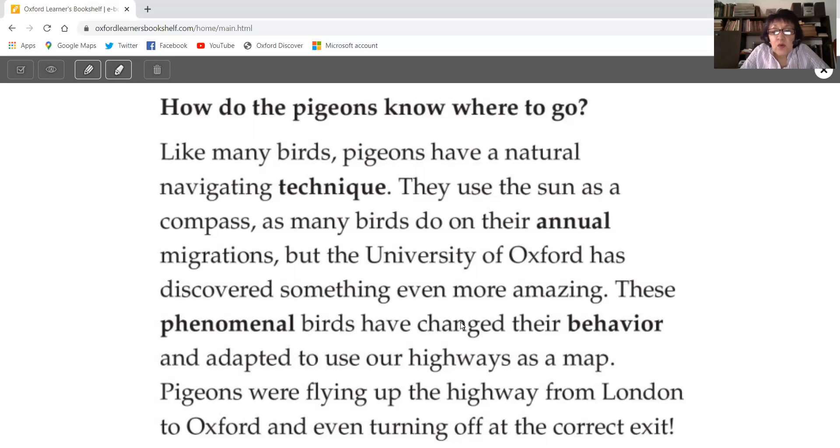How do the pigeons know where to go? Like many birds, pigeons have a natural navigating technique. They use the sun as a compass, as many birds do in their annual migrations. But the University of Oxford has discovered something even more amazing. These phenomenal birds have changed their behavior and adapted to use our highways as a map. Pigeons were flying up the highway from London to Oxford and even turning off at the correct exit. Wow, that's amazing.